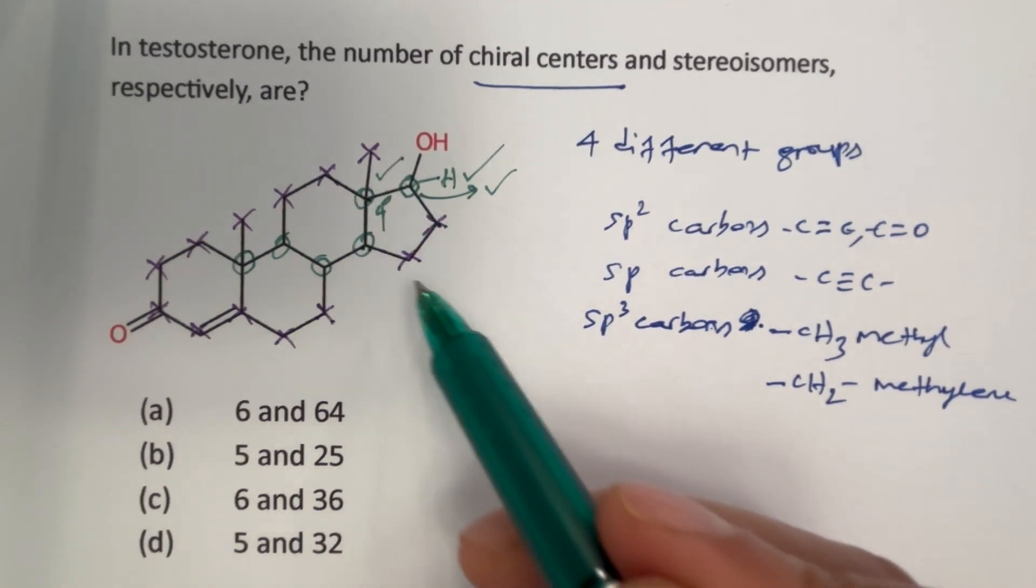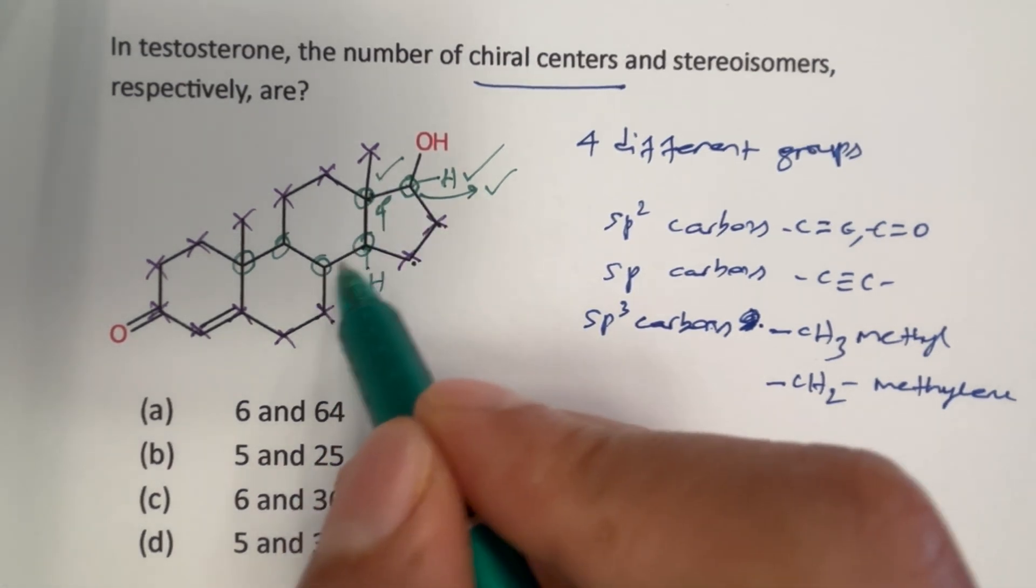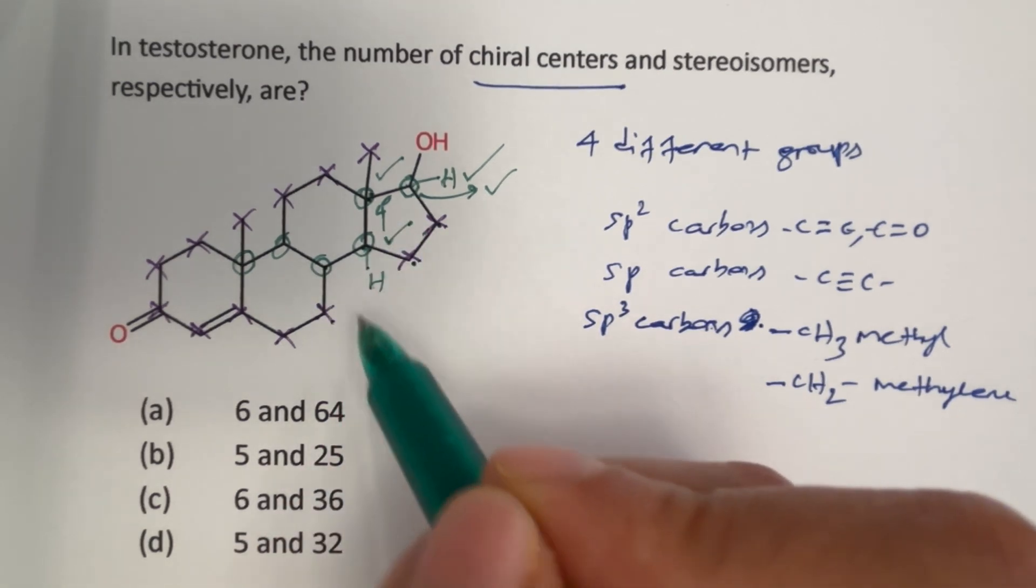And here we have CH2, we have quaternary carbon and there is a hidden hydrogen and then CH here, CH2 here. Therefore, this is also chiral, four different groups.